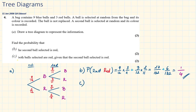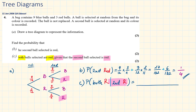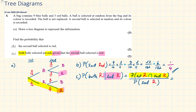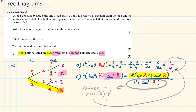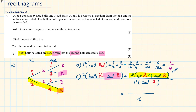Next, find the probability that both balls selected are red, given that the second ball selected is red. We are looking at the world where the second ball is red, so this will be the denominator. The numerator will be the probability of the intersection of the first ball being red and the second ball being red, as highlighted in yellow. We already calculated the probability that the second ball is red in part b — that is one quarter, so this is our denominator. As we go along the branches we multiply the probabilities, so the numerator is 3 out of 12 times 2 out of 11, giving us 2 out of 11.